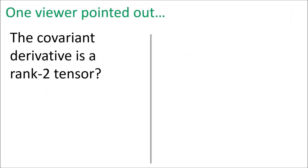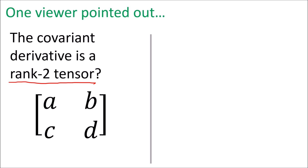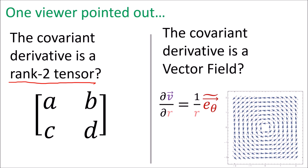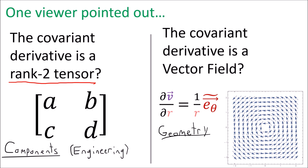One viewer pointed out that they had been taught that the covariant derivative of a vector field is a rank 2 tensor, which is basically something like a matrix. They wondered how the covariant derivative could result in both a matrix and a vector field, since those seem like different things. It turns out there's no contradiction here — it's just that we're looking at the covariant derivative from different points of view. The matrix point of view focuses on components, and this is often the approach taken by engineering students, whereas the vector field approach focuses on geometry and is taken more by students of pure mathematics.